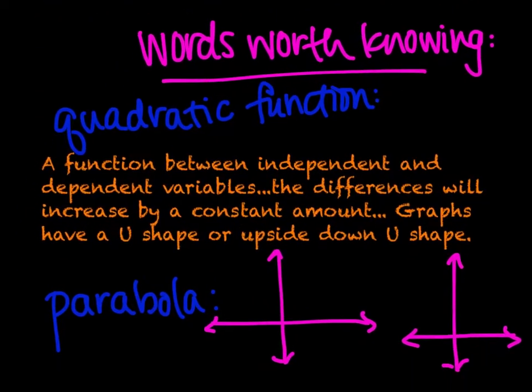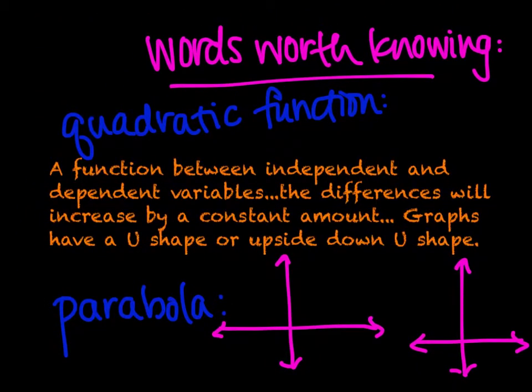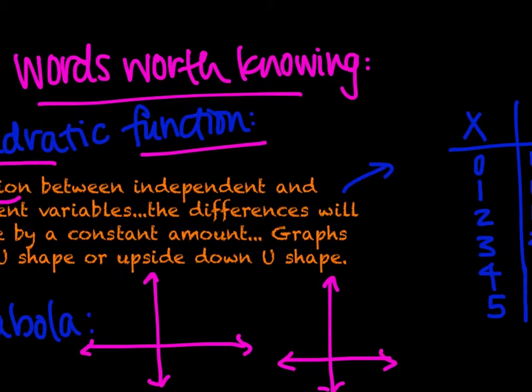Our words worth knowing. First word worth knowing is quadratic function. A quadratic function is a function between independent and dependent variables, just like a linear function or an inverse function or an exponential function. The differences will increase by a constant amount. The graphs will have a U-shape or an upside-down U-shape.